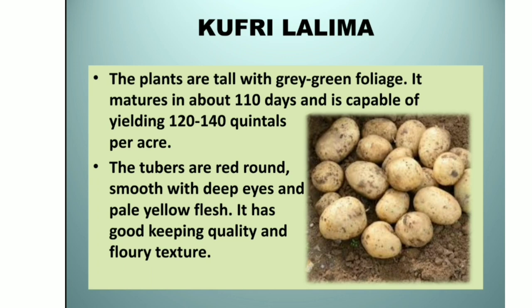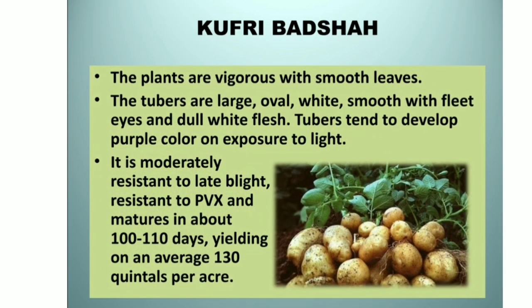Kufri Lalima: the plants are tall with gray-green foliage. It matures in about 110 days and is capable of yielding about 120 to 140 quintals per acre. The tubers are red, round, smooth with deep eyes and pale yellow flesh. It has good keeping quality and floury texture. Kufri Badshah: the plants are vigorous with smooth leaves. The tubers are large, oval, white and smooth with flat eyes and dull white flesh. Tubers tend to develop purple color on exposure to light. It is moderately resistant to late blight, resistant to PVX, and matures in about 100 to 110 days, yielding on average 130 quintals per acre.